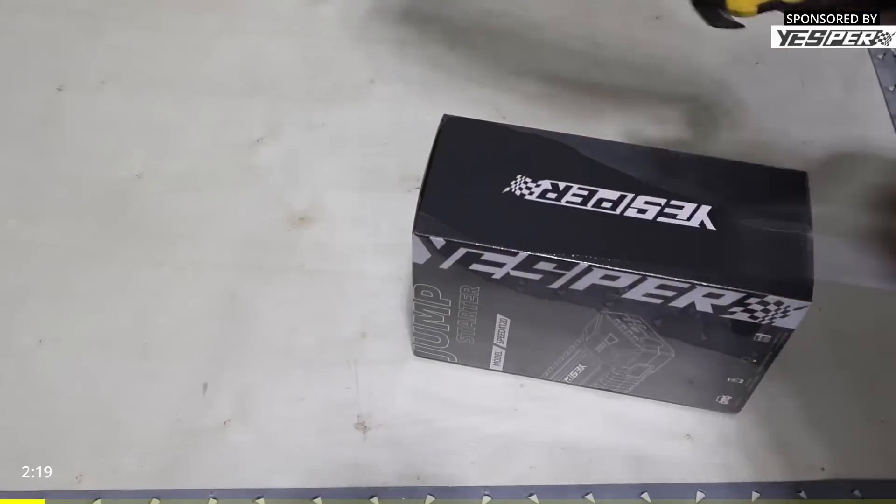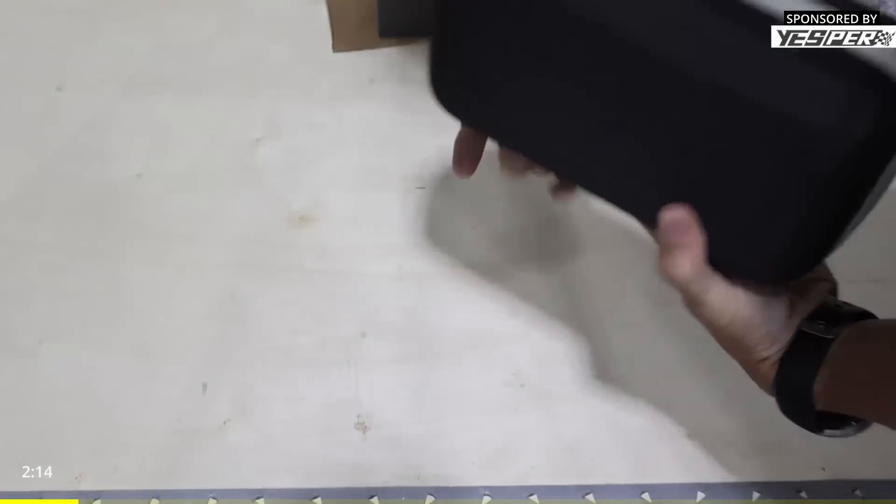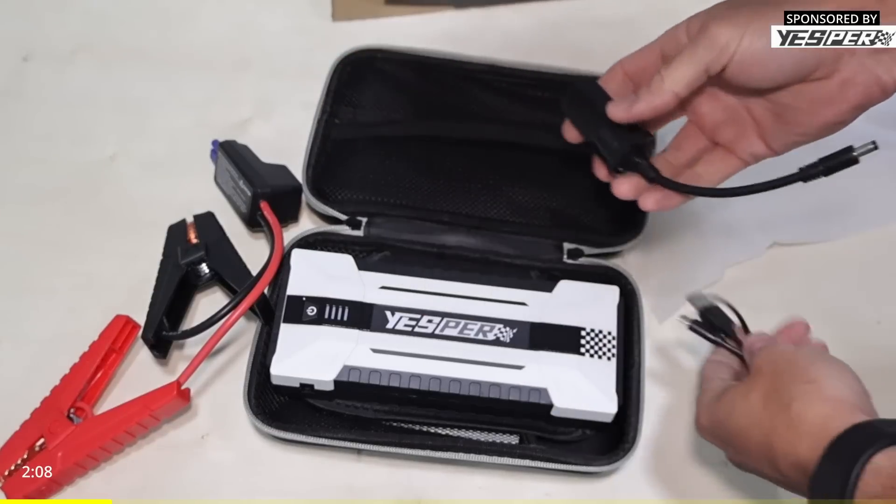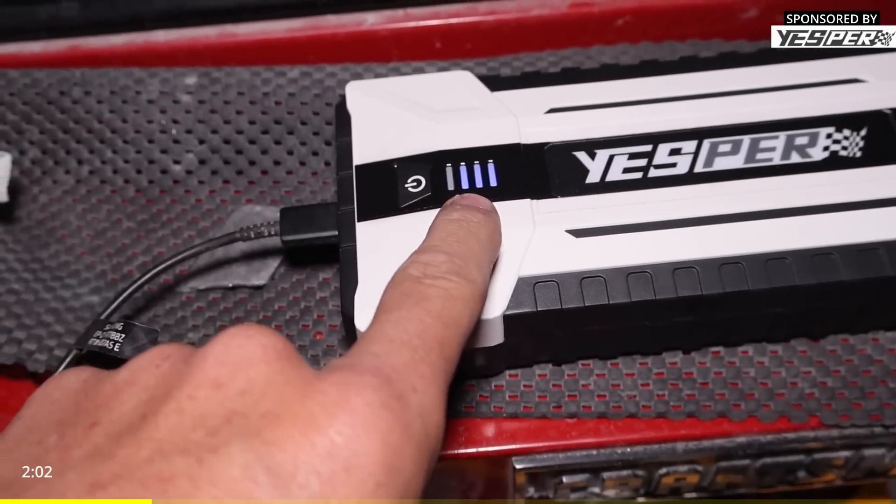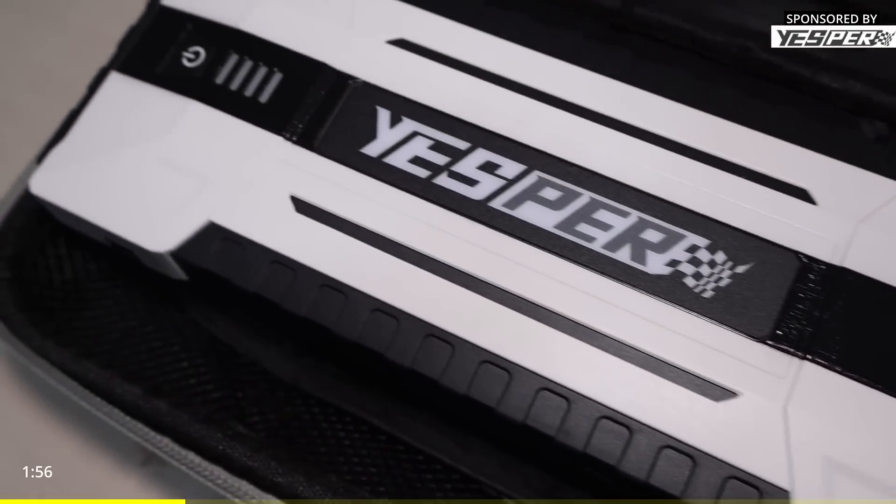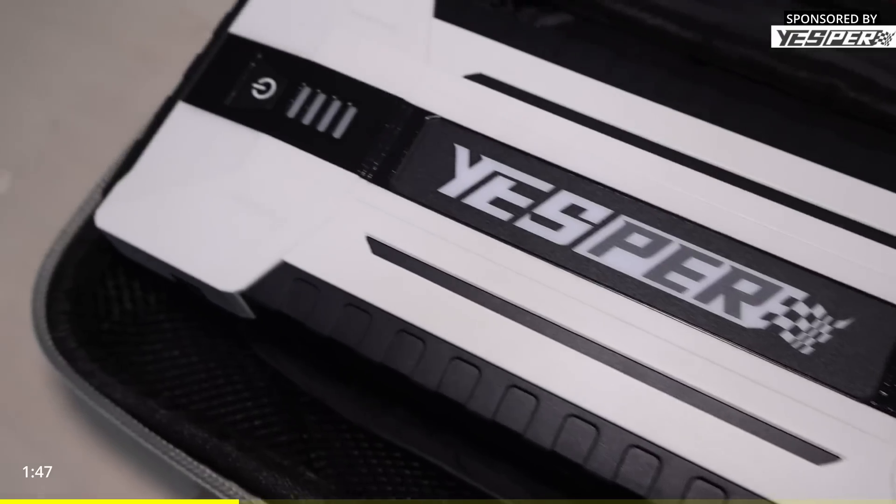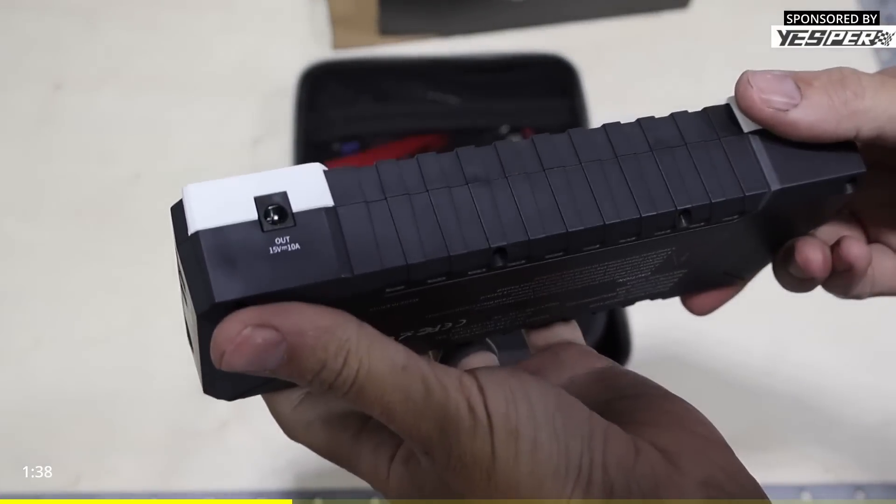For today's sponsor, we have a jump starter from Jesper. It's got a very nice carrying case with jumper cables, charging cable and adapter. When plugged in, it's got blue light indicators that show the state of charge. It's got one that's flashing, so it's kind of half full and charging to three quarters full. The Jesper 4120A will jump start anything from a motorcycle to a 10 liter diesel truck. 4120 is the peak amperage, with 600 amps starting current, operating from minus 20 to 60 degrees Celsius.